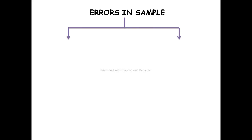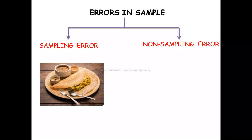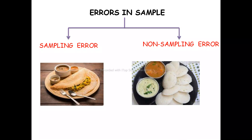Errors in sampling are of two types: sampling error and non-sampling error. Sampling error is the difference you get from asking a group of people rather than everyone — you are never going to get an exact answer. For example, if you want to know whether exactly 50% of Indians prefer masala dosa over idli sambar, if you ask 100 people you are unlikely to get exactly 50 saying each option. This unavoidable inaccuracy is called sampling error.